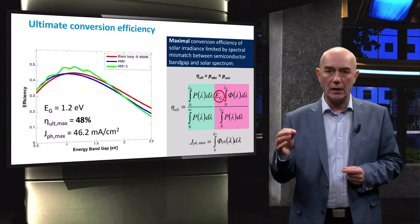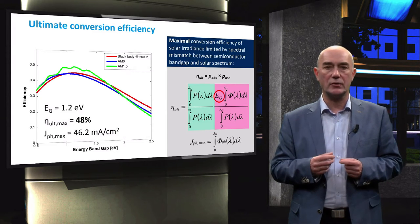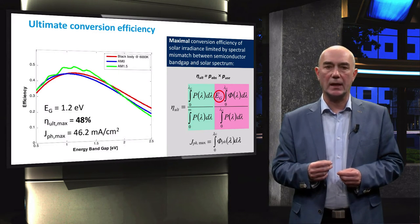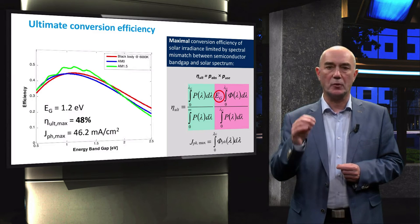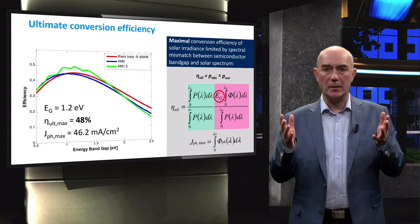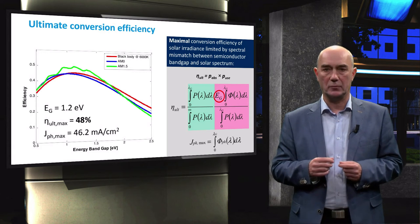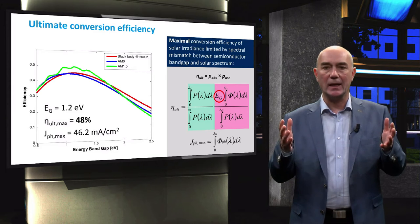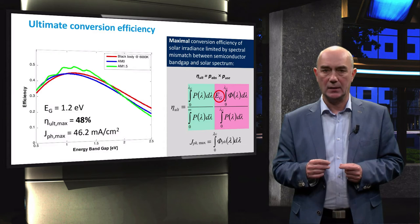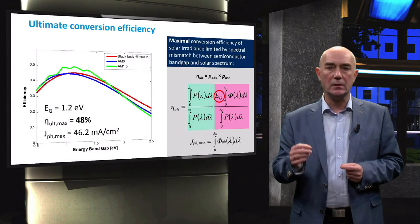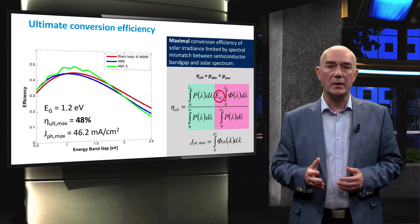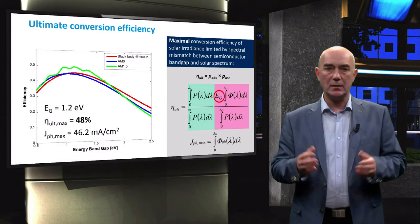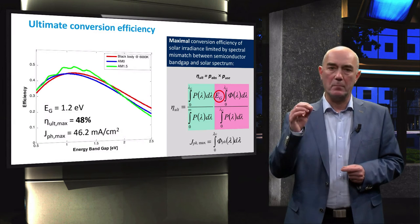The figure on the left shows the ultimate conversion efficiency as a function of absorber bandgap energy for different spectra. In case of the AM 1.5 spectrum, which is represented by the green line, the maximum ultimate efficiency is around 48%. This is for a solar cell with the absorber that has a bandgap of 1.2 eV. We can also calculate number of photons that the absorber material absorbs from the AM 1.5 spectrum and relate it to a potential photocurrent density. This potential photocurrent density represents the maximal short-circuit current that a solar cell with an absorber of a certain bandgap can deliver. In case of an absorber with a bandgap of 1.2 eV, the maximum photocurrent density is 46.2 mA per square centimeter.